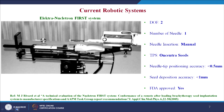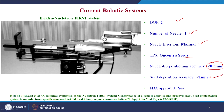Now we enter into the current robotic systems. The first system is the Electronucleotron system — a fully integrated real-time seed implantation treatment system. It has 2 degrees of freedom and involves one needle. The needle insertion is manual. The treatment planning system is OnCentra Seeds. The needle tip positioning accuracy is less than 0.5 mm, seed deposition accuracy is less than 1 mm, and it has FDA approval.